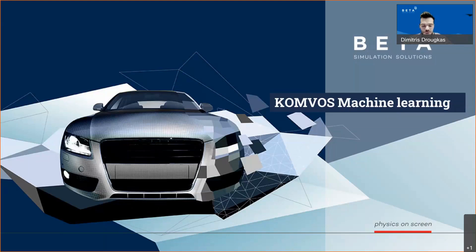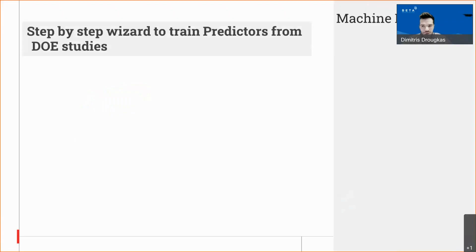Initially, I will start with a few slides to showcase what we are going to see. The process of machine learning in the Beta software was achieved by a number of additions in the ANZA software and of course the DM, which is used in order to make this possible.